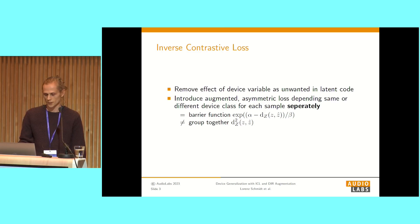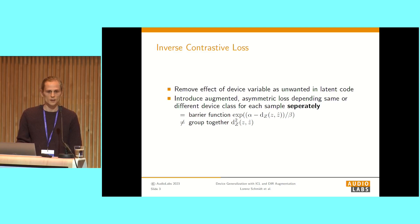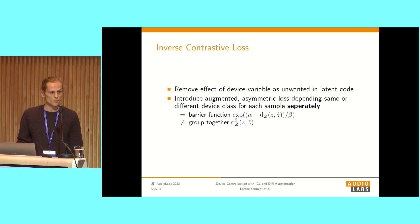We compared two techniques: inverse contrastive loss and device impulse response augmentation. For ICL, this is basically an augmented isometric loss. If we have the same device class for a sample, we push it away using a barrier function, where beta is the strength of the barrier and alpha is the hypersphere radius. If the device classes differ, we group them together. We learn these via hyperparameter search, and the effect is that we remove the unwanted device effect on the latent embedding.